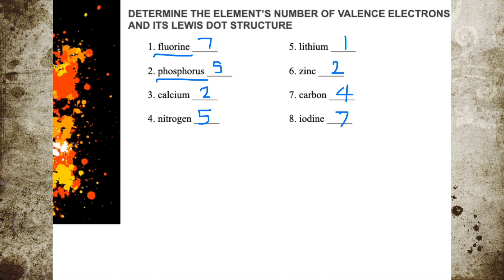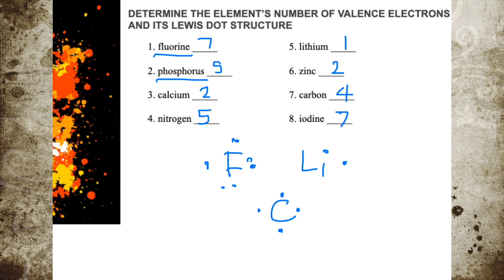So if you are asked to write or draw these in a Lewis dot structure: Fluorine (F) will have one, two, three, four, five, six, seven dots. Lithium, which has only one, will have one dot. Carbon, on the other hand, will have one, two, three, four dots.